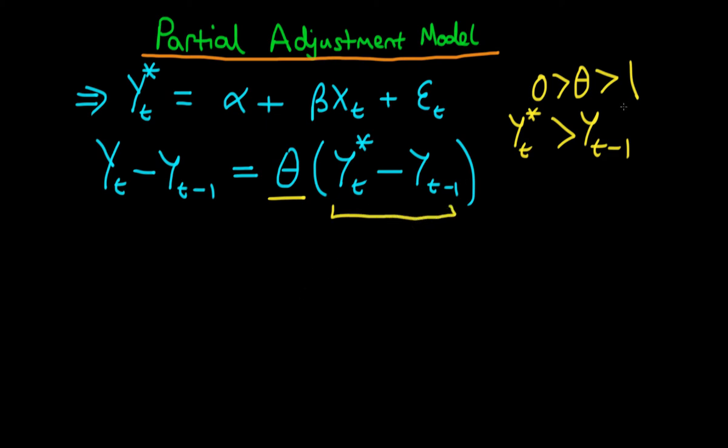But because theta is less than one, there isn't a full adjustment to the equilibrium value of y. It only goes part of the way. Perhaps theta equals 0.5, in which case the long-run growth rate only steps half of the way towards the equilibrium growth rate.